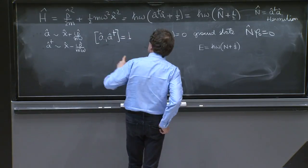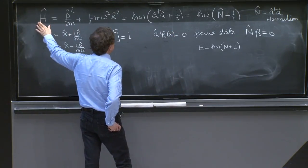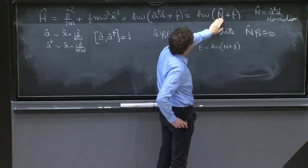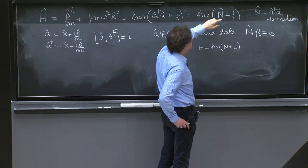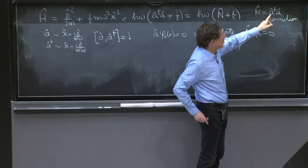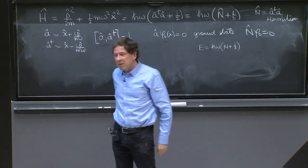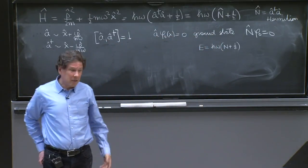Now, the other thing to notice is that the Hamiltonian is really pretty much the same thing as the number operator multiplied by something with units of energy. The number operator has no units, because a and a dagger have no units. And that's very useful.